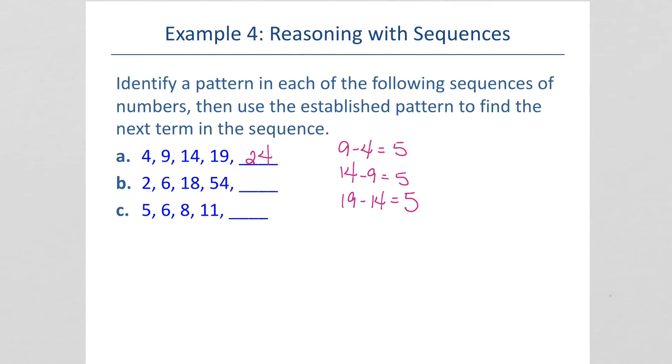2, 6, 18, 54. Well, it's pretty clear that this is not going up by just adding because the numbers are jumping too much. So this time I think we're going to need to divide. We've got 6 divided by 2, that gives us 3. 18 divided by 6 also gives us 3. And 54 divided by 18 gives us 3. So we've moved from 1 to the next by multiplying by 3. 2 times 3 is 6, 6 times 3 is 18, 18 times 3 is 54. Then, 54 times 3 is 162.